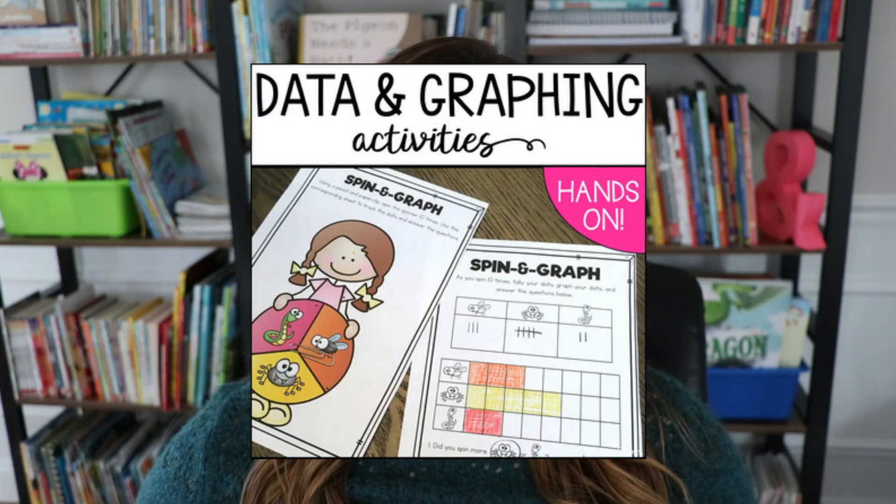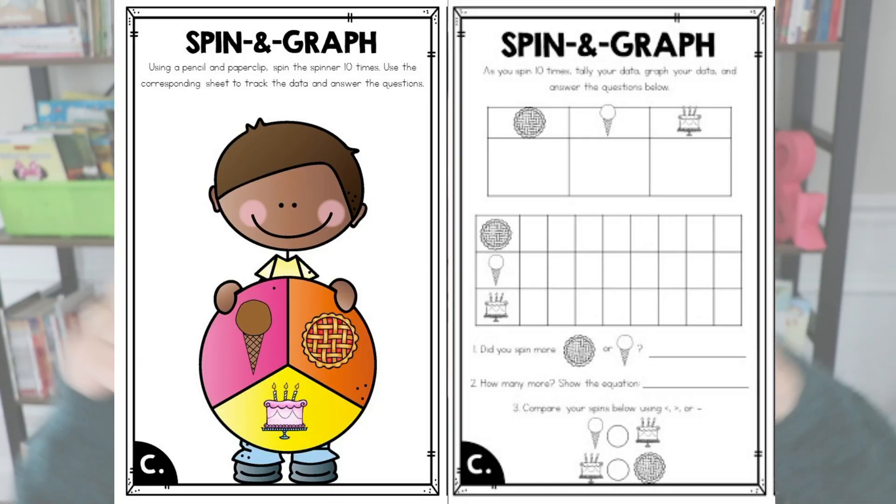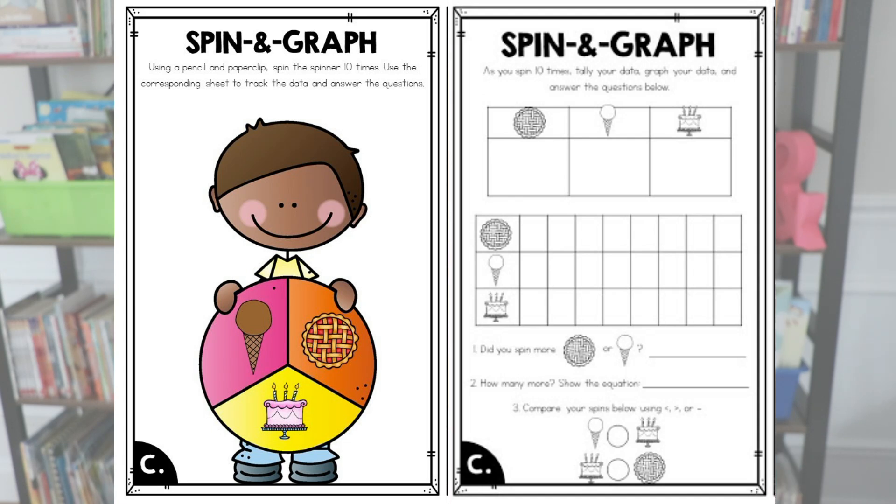Those spin and graph activity sheets are from my graphing and data unit on TPT. Actually, all the activities I've mentioned in this video — the sheets and directions — are included in that unit. It's a relatively inexpensive unit that has all these activities and many more, including some task cards. Because you made it this far, I want to give you the spin and graph sheet with the little boy and three options, along with its recording sheet, for free. I'll link that down in the description below.